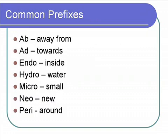We're going to start with prefixes. Prefixes, of course, occur at the beginning of a word. The first example is 'ab.' An example word for that might be abduction. If a child is abducted, they're taken away or carried away from their parents or home.